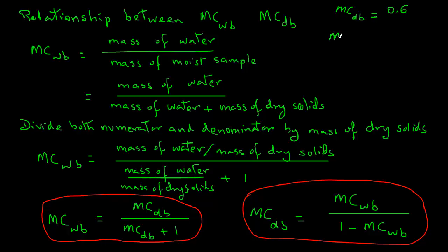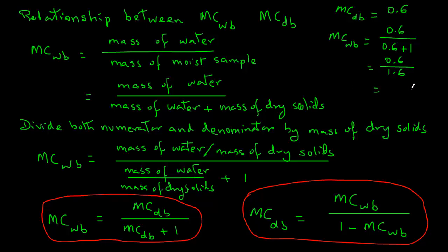Using the equation we developed, moisture content wet basis equals 0.6 in the numerator, divided by 0.6 plus 1. That gives us 0.6 divided by 1.6, and that equals 0.375.